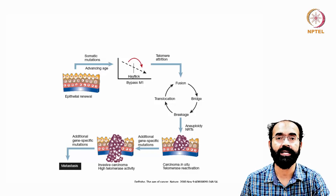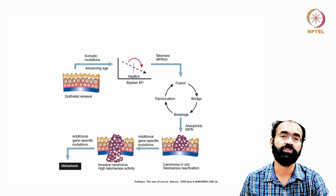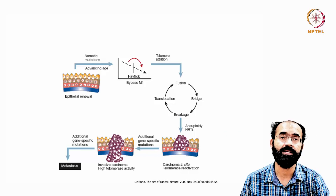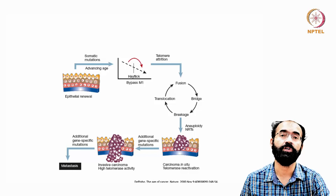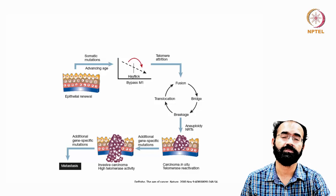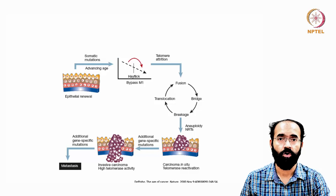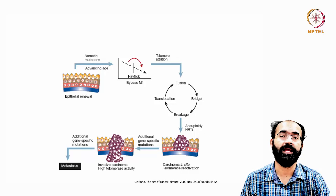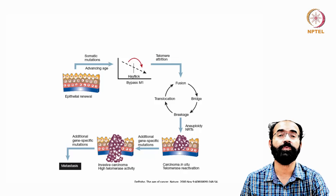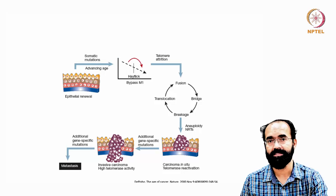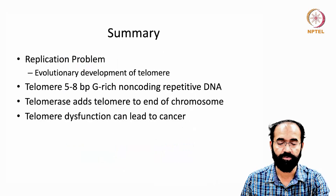Metastasis means the cancer starts invading other organs. A cancer originating in the liver or lungs can go to the kidney, brain, heart, intestine, or multiple organs. Metastasis does not mean it goes from organ A to organ B only — it can go from organ A to B, C, D, and E, complicating the situation significantly.